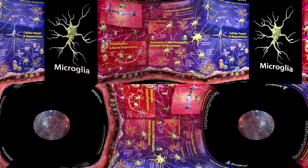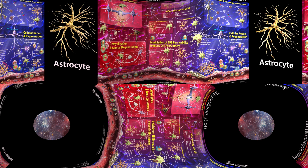Using their processes, microglia constantly survey their domain to perform housekeeping functions, such as cleaning up random cellular debris. These processes are sensitive to small changes in physiological conditions of their environment. Microglia can search for and identify immune threats while maintaining homeostasis in the CNS, and are morphologically extremely plastic, undergoing structural changes based on the needs of their environment.